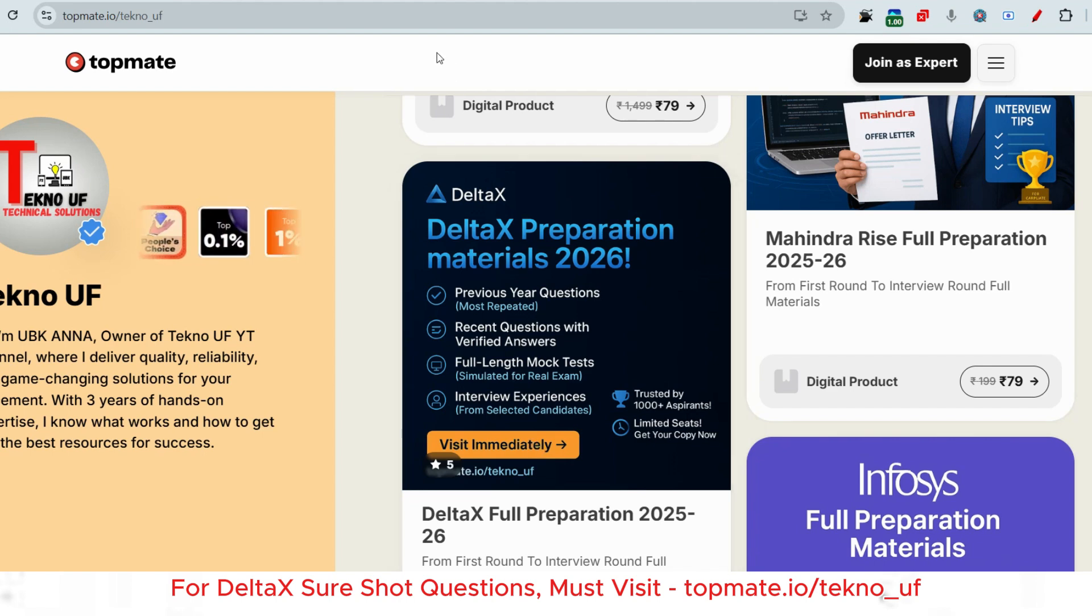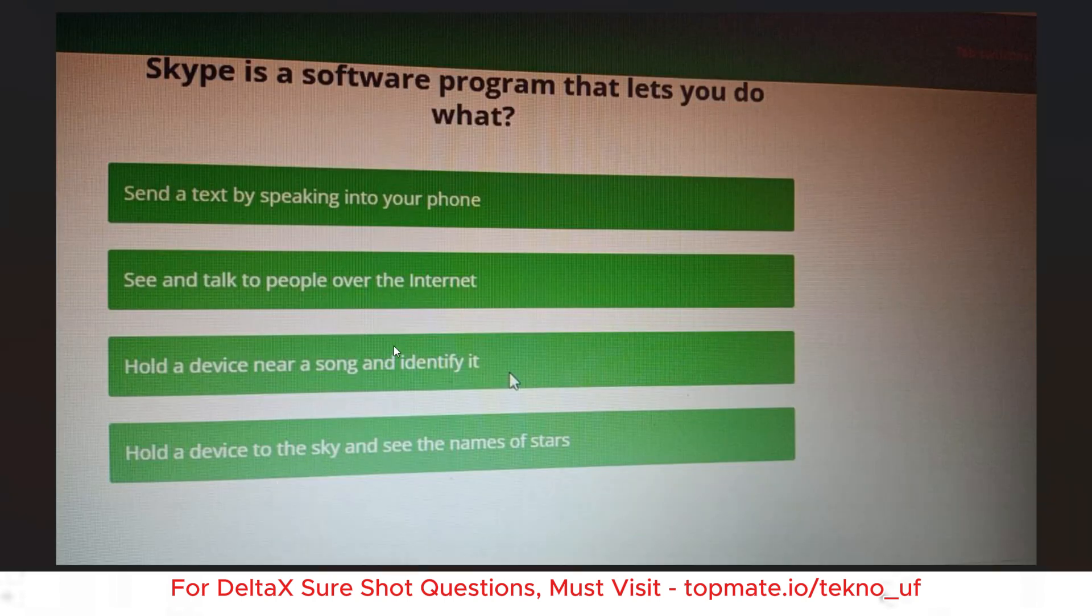The next question is this: Skype is a software program that lets you do what? Send a text by speaking into your phone, see and talk to people over the internet, hold a device near a song and identify it, or hold a device to the sky and see the names of stars.